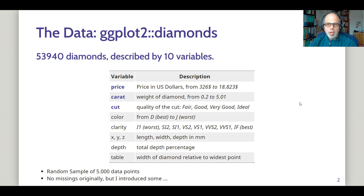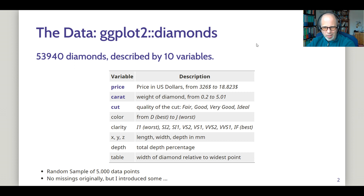The data I'm using today is from the ggplot2 package — the diamonds dataset. Those of you who've worked with it may know that there are no missings in this data, so that was a great chance for me to explore some ways of simulating missing data problems. The dataset comprises 10 variables, but I'm just using three for today's video: the price in dollars, the carat — the weight of the diamond — and lastly for the second example, the cut — the quality of the cut.